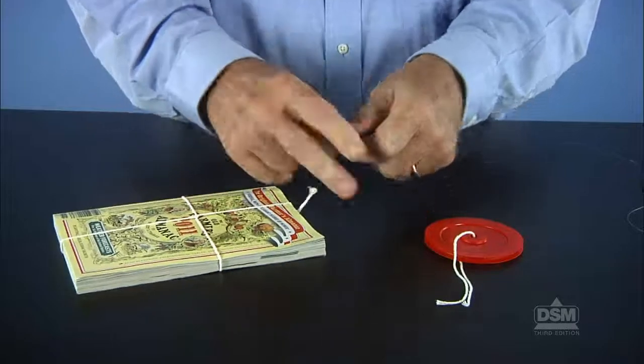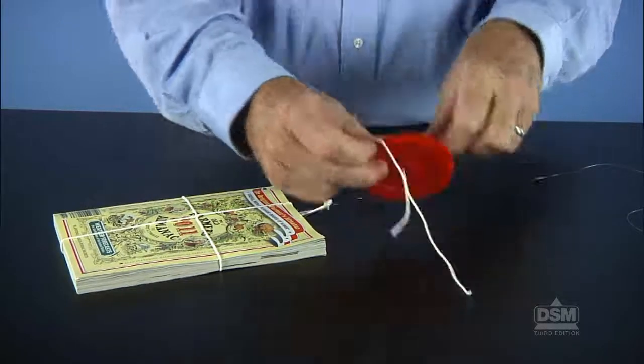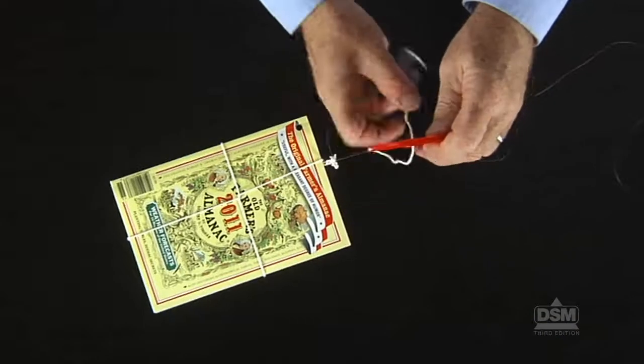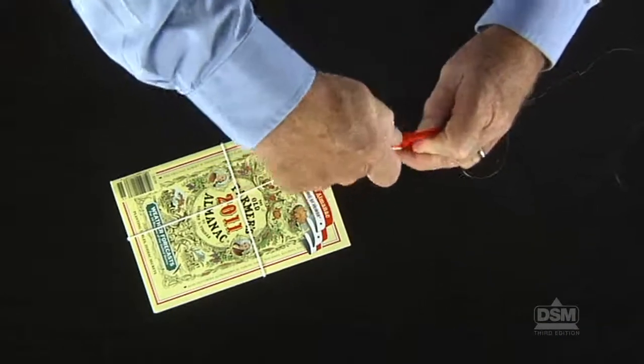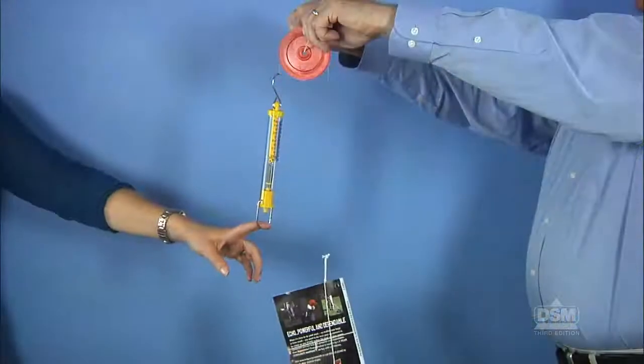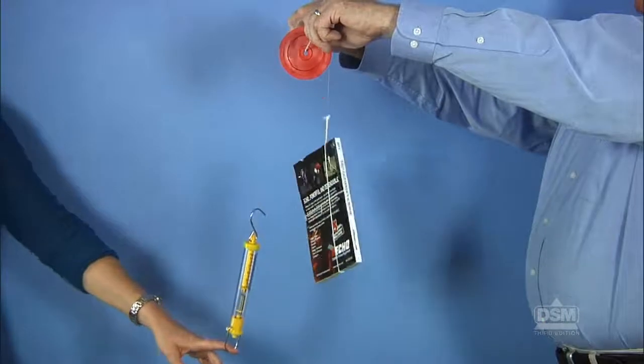Instruct another team member to tie the 1.5-meter piece of fishing line to the string around the book. Loop the fishing line over and into the groove on the pulley and attach the spring scale to the other end of the line. Then tell students to pull on the spring scale to lift the book from the floor to the desktop.